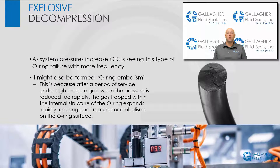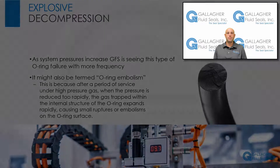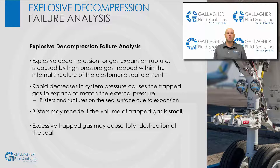The next failure mode is called explosive decompression. As system pressures increase, Gallagher Fluid Seals is seeing this type of O-ring failure with more frequency. It might be termed O-ring embolism in that after a period of service under high pressure gas, when the pressure is reduced too rapidly, the gas becomes trapped within the internal structure of the elastomeric seal element. Rapid decreases in system pressure cause the trapped gas to expand to match the external pressure, and this expansion causes blisters and ruptures on the seal surface.